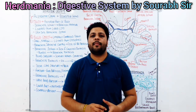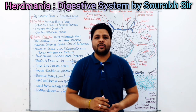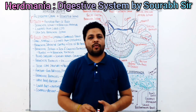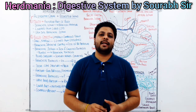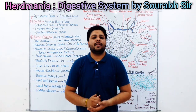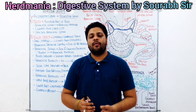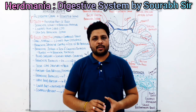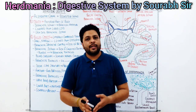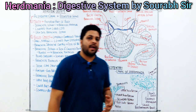Herdmania is sessile and sedentary, available on rocky sea bottoms. Its larva is free-swimming, possessing all chordate characters such as the notochord and pharyngeal gill slits. These characters are not present in the adult phase — they are degenerated. When the larva converts to the adult phase, a retrogressive metamorphosis occurs, so many larval characters are absent in the adult, which has complex structures.